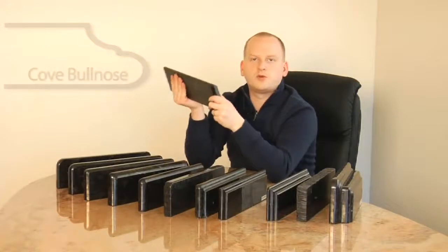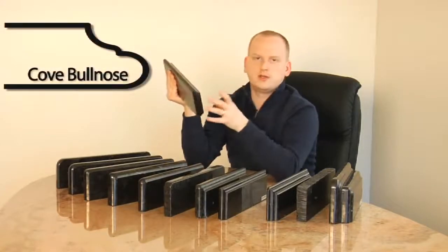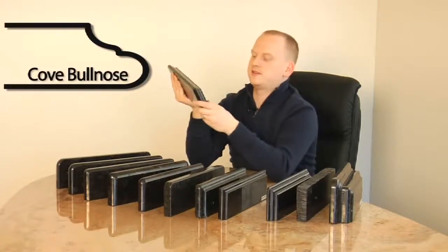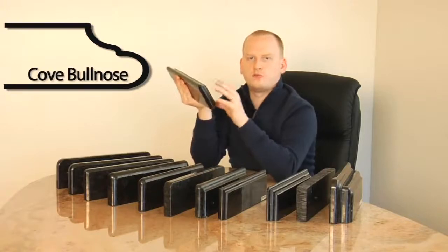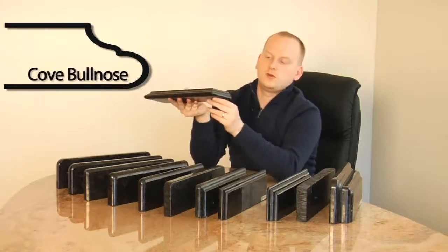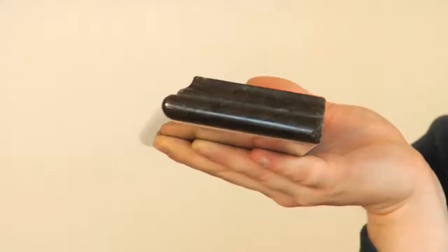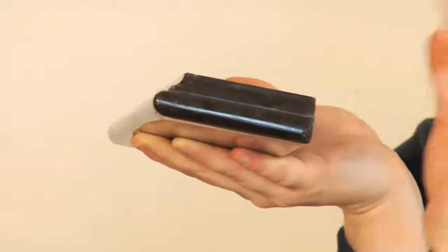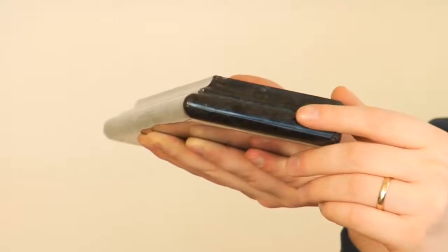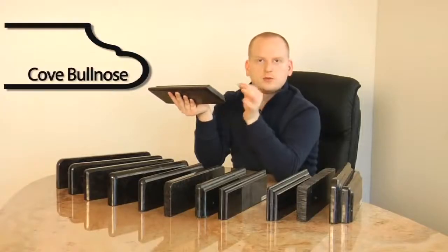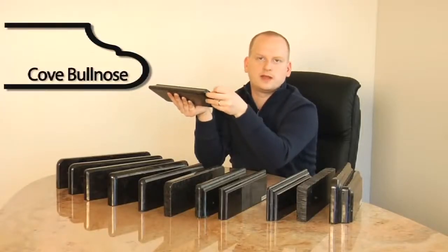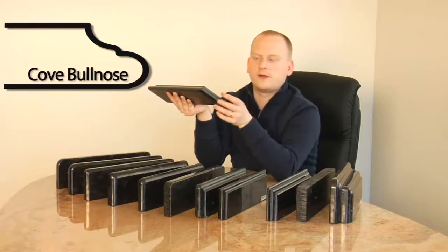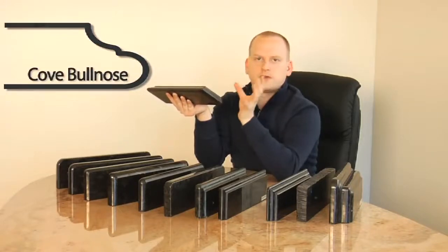And now we're moving to the really intricate designs. This one is called Cove Bullnose. So you see you have a very nice step down into the bullnose. And this is more of a decorative edge. Not as practical because you have that ridge over here that tends to catch dirt a little bit more, but still a very, very nice edge.